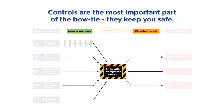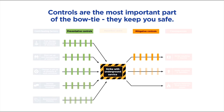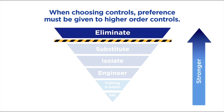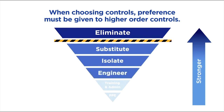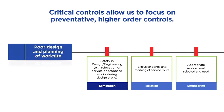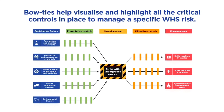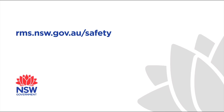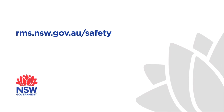In summary, controls are the most important part of the bowtie — they keep you safe. So when choosing controls, preference must be given to higher order controls: elimination, substitution, isolation, engineering. Critical controls allow us to focus on preventative higher order controls, as without them the risk would significantly increase. Bowties help us to visualize and highlight all the critical controls in place to manage a specific WHS risk. Bowties form part of our agency's safety risk register under the OneRMS Safety Management System.